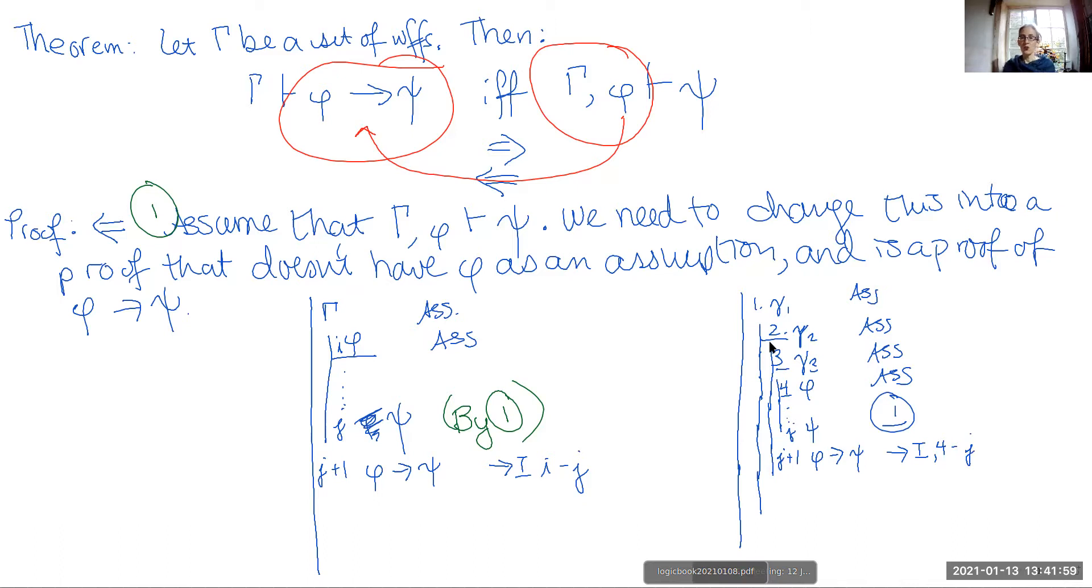But now, j plus one depends on the assumption at line three. So we can do exactly the same thing. So at line j plus two, I could say, if I have gamma three, then I can prove that phi implies psi. So that's conditional introduction from lines three to j plus one.